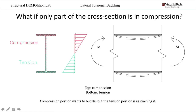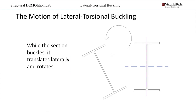What if only part of the cross section is in compression? When a beam is subjected to positive flexure, as shown in this picture, the top half of the beam is in compression, as indicated by the red shaded area. The lower half of the beam is in tension, indicated by the green shaded area. The portion in compression wants to buckle like we would expect, but it is restrained by the portion in tension. However, it can still buckle in the lateral direction. While the failure mechanism occurs, the section undergoes two motions: it translates laterally and it rotates. For a W section, it rotates towards the weak axis of bending. As a rule of thumb, a section will be more susceptible to lateral torsional buckling if there is a large difference between the moment of inertia in the strong axis versus its weak axis.